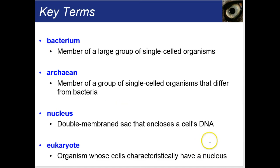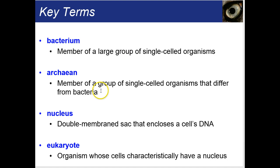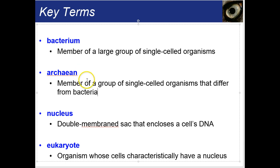Bacterium (singular for bacteria) is what we think of when we think of bacteria, like E. coli or strep bacteria. Archaeans are members of bacteria that are very different and seem to be extremophiles — they live in places many other organisms cannot, such as in hot springs, salty environments, or very cold environments. They used to be part of the bacteria kingdom, but now they get their own kingdom because they are indeed so different.